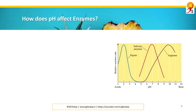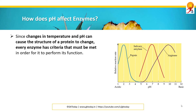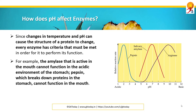How does pH affect enzymes? Since changes in temperature and pH can cause the structure of a protein to change, every enzyme has criteria that must be met in order for it to perform its functions. For example, the amylase that is active in the mouth cannot function in the acidic environment of the stomach. Pepsin, which breaks down proteins in the stomach, cannot function in the mouth.